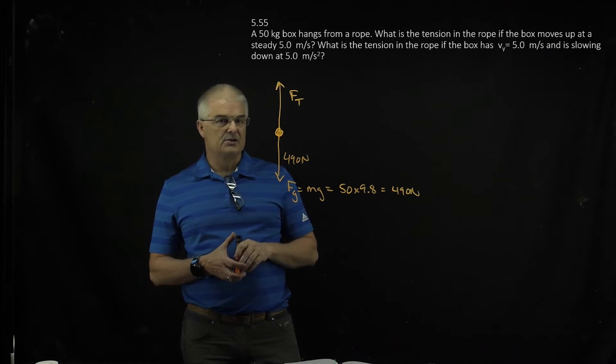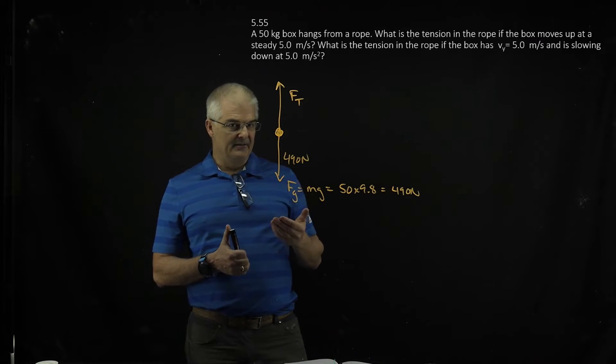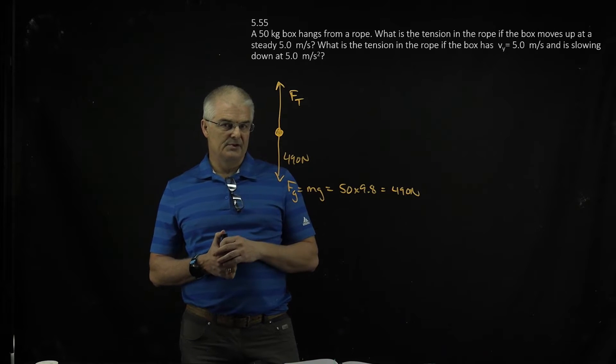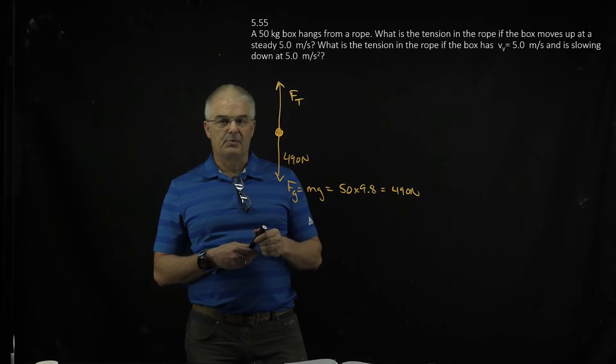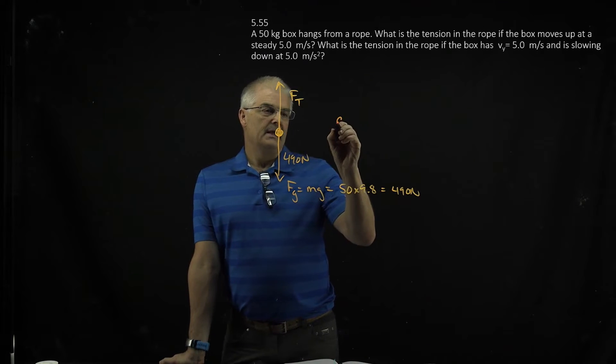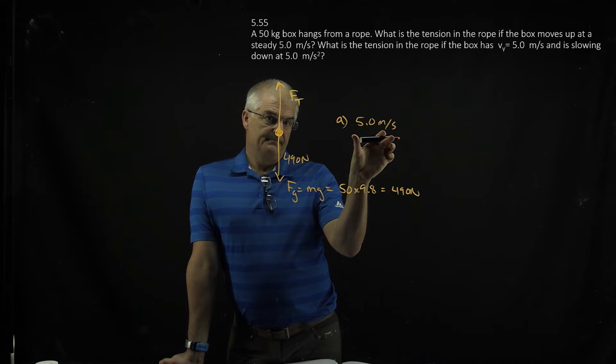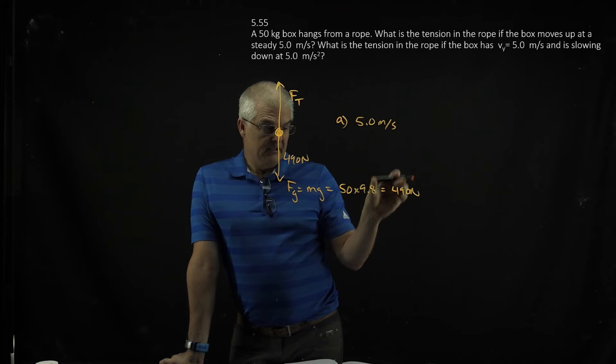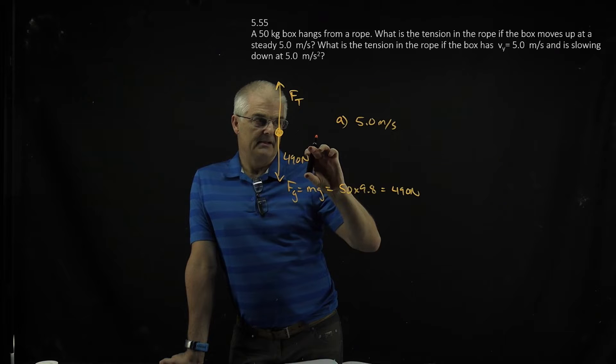What is the tension of the rope if the box has a velocity of 5 meters per second and is slowing down at a steady 5 meters per second squared? Now the key on this, or actually there's part A, if it's moving at 5 meters per second, it is not accelerating. So the answer to part A is going to be 490, because it's going to be balanced. Forces have to balance out.